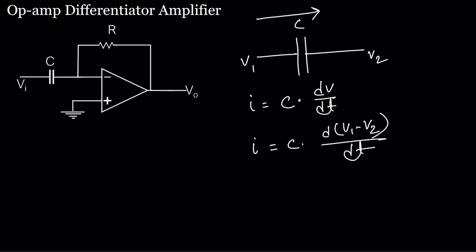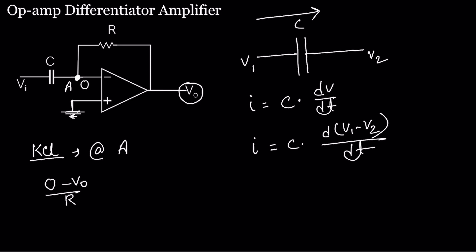Now we will use this current equation to calculate the output voltage V0. Let's assume this point is point A. Due to virtual ground, the voltage at point A is zero. Applying KCL we get: (0 - V0)/R plus C · d(0 - Vi)/dt = 0.